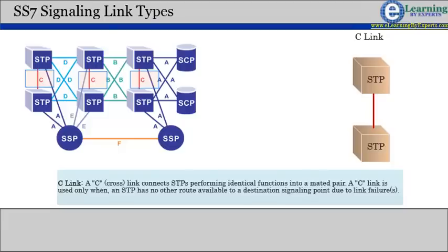A C link is used only when an STP has no other route available to a destination signaling point due to link failure.